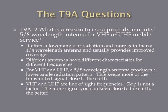What is the reason to use a properly mounted 5/8-wavelength antenna for VHF or UHF mobile service? It offers a lower angle of radiation and more gain than a quarter-wavelength antenna, and usually provides improved coverage. For VHF and UHF, a 5/8-wavelength produces a lower angle of radiation. Since UHF and VHF are line-of-sight frequencies, this low angle keeps the majority of the signal closer to the earth, giving more power in the right direction. It also receives signals better from this direction.